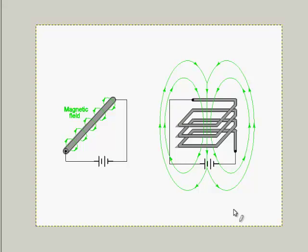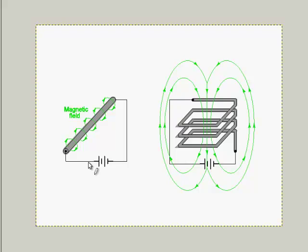Now, what we're looking at here are two electrical circuits. We've got one that's just one loop of wire with a battery carrying some current. And the other one is a battery with wire that's looped around three or four times. Since current is going to create a magnetic field, the strength of that magnetic field is going to be determined by how much current is flowing.